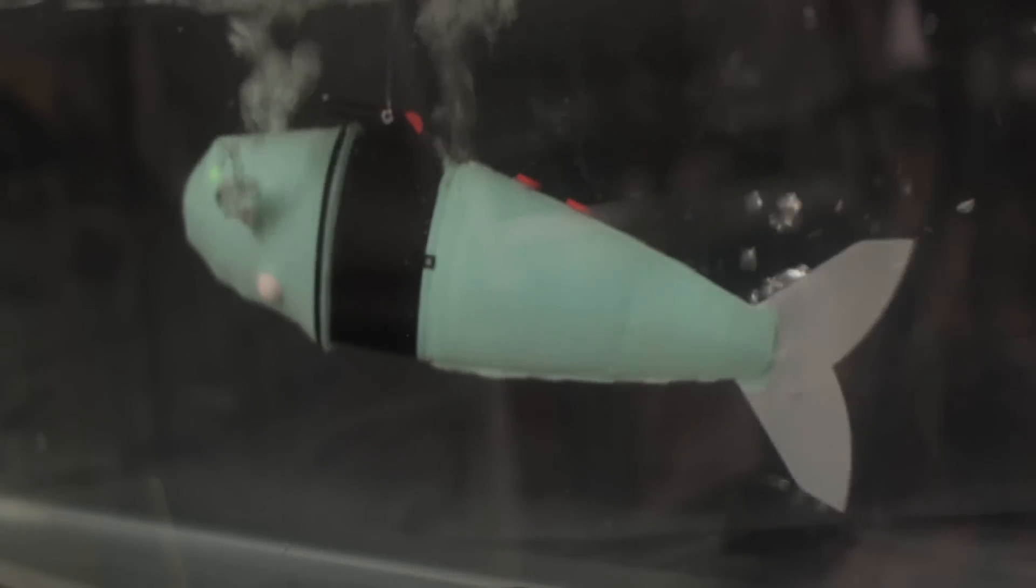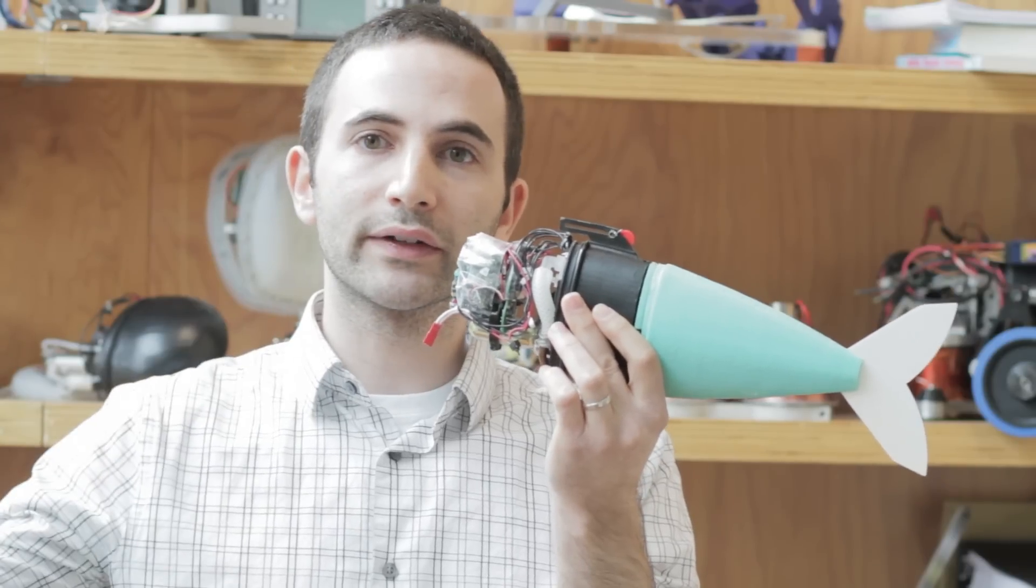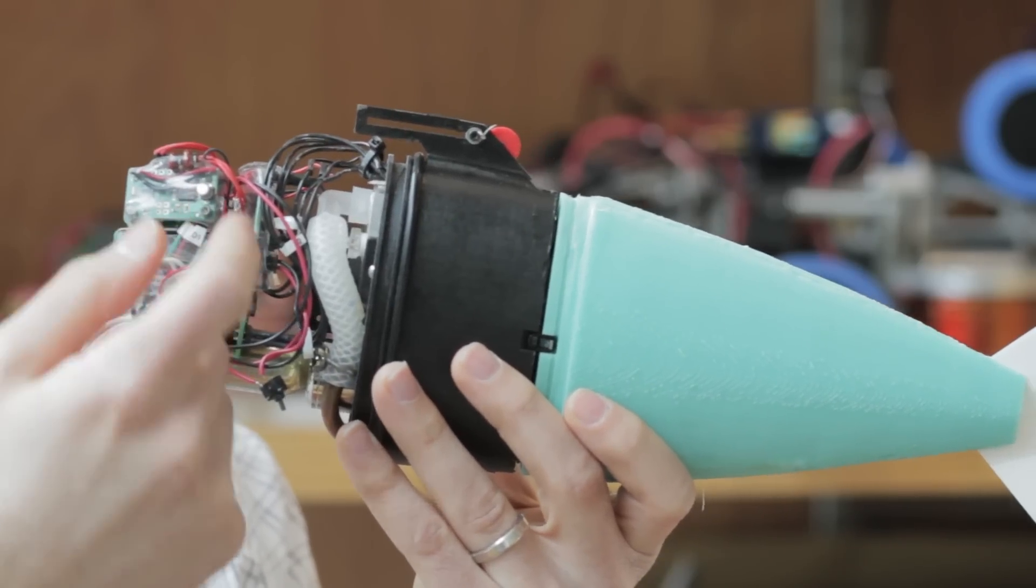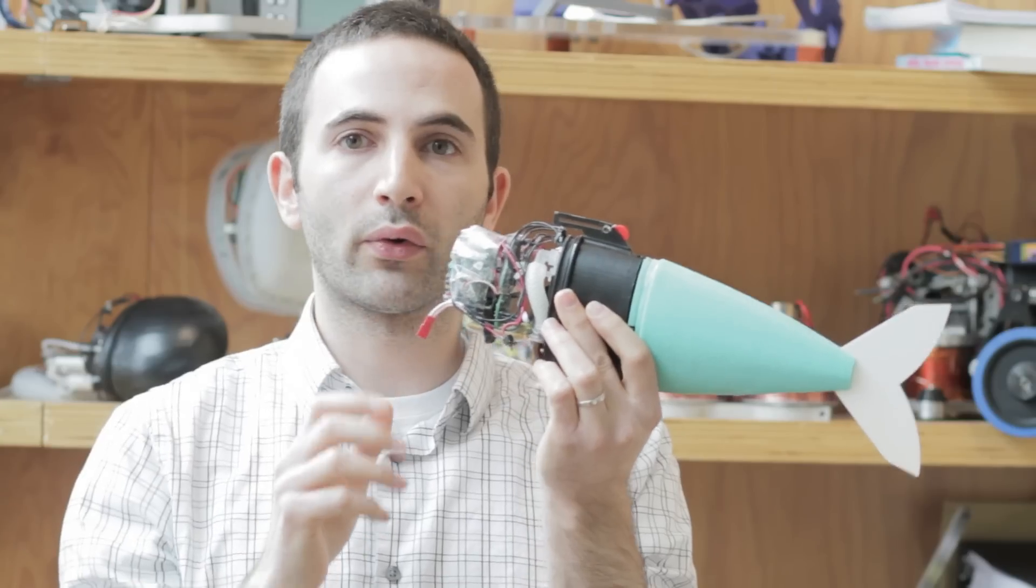What's special about this fish is that it has its brains on board too. So if I, from my computer, tell the fish to move forward, a signal is sent wirelessly through the water to the brains, and then the brains tell the hardware what to do in order to move forward.